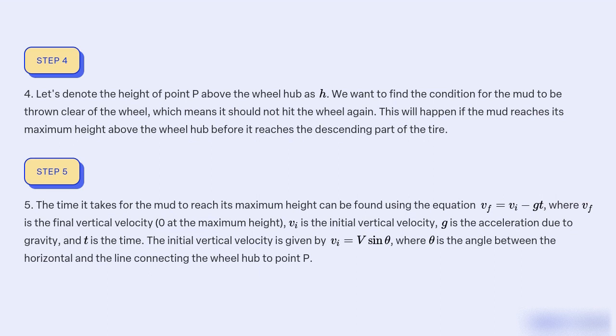g is the acceleration due to gravity, and t is the time. The initial vertical velocity is given by Vi equal to V sin θ, where θ is the angle between the horizontal and the line connecting the wheel hub to point P.